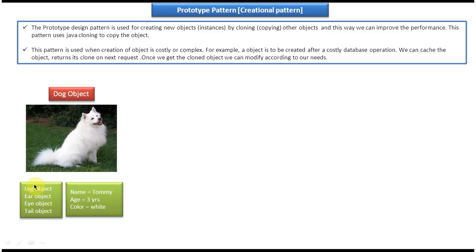So I have to create a new leg object and set its values, create an ear object and set its properties, create a tail object and set its properties. After doing all those things, I use these small sub-objects to construct the dog object.